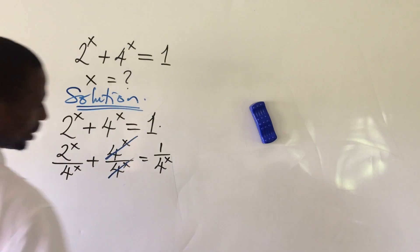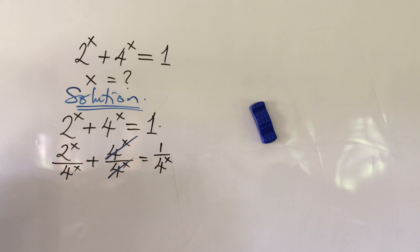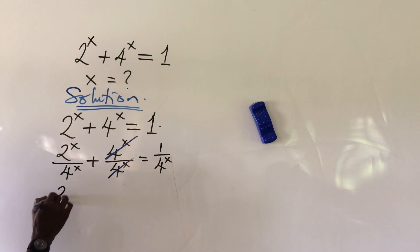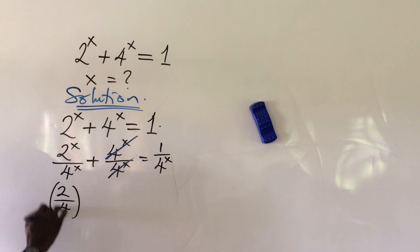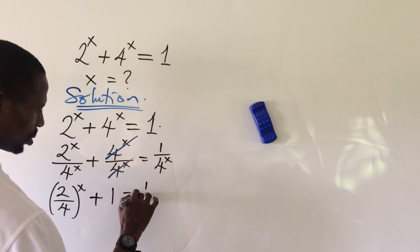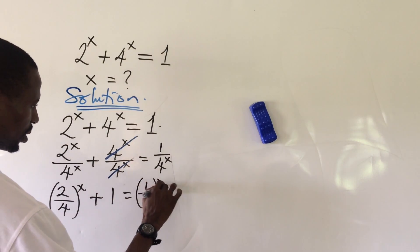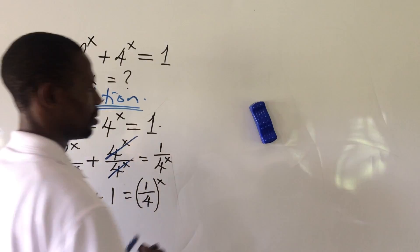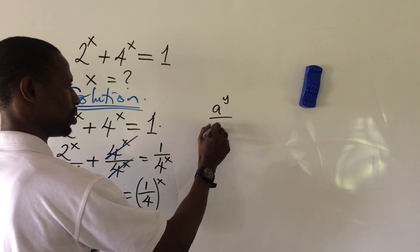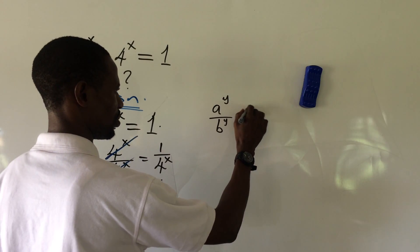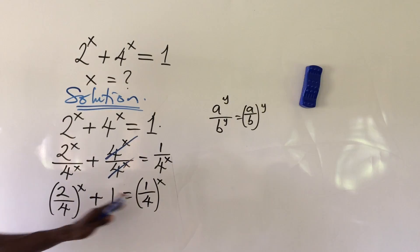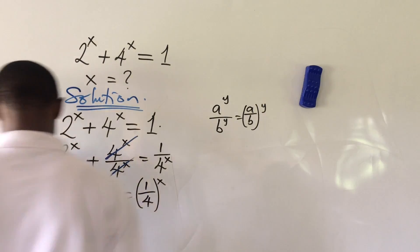We can equally do the same on the right side, because 1 to the power of anything will give us 1. So if we apply that rule, we're going to have 2 all over 4, all to the power of x, plus 1, equal to 1 all over 4, all to the power of x. The law of indices I just applied here says that a to the power of y over b to the power of y can be written as a all over b, all to the power of y.